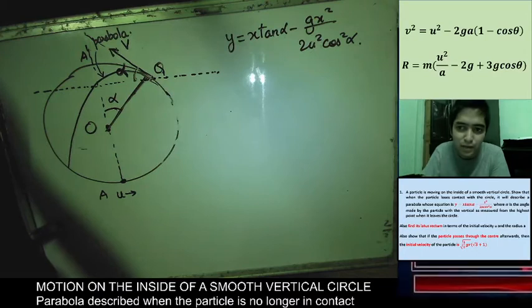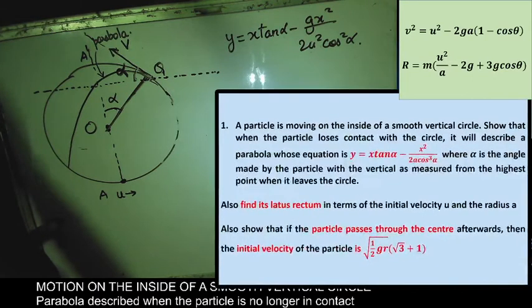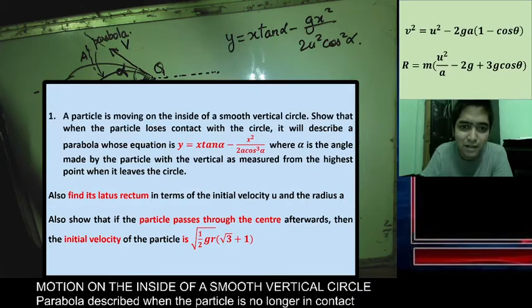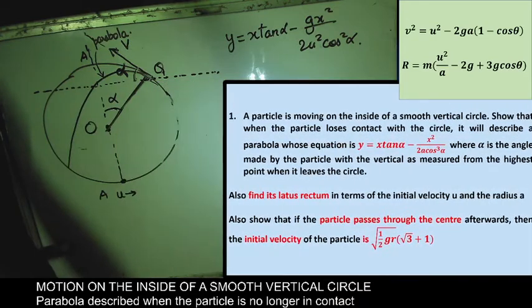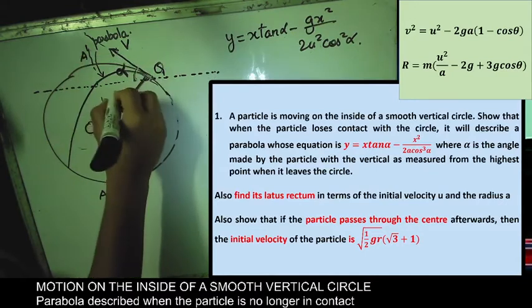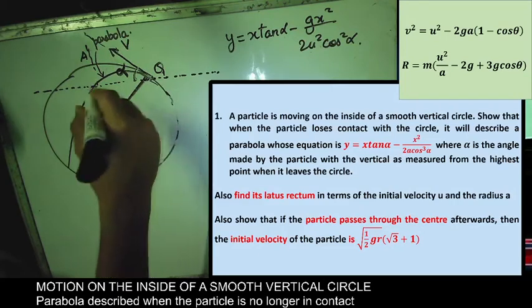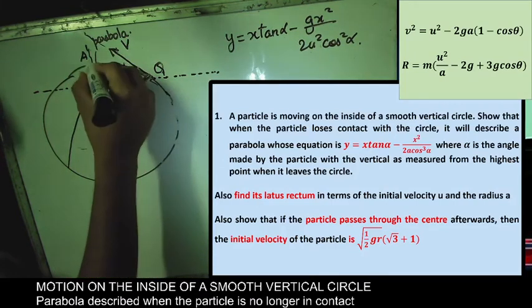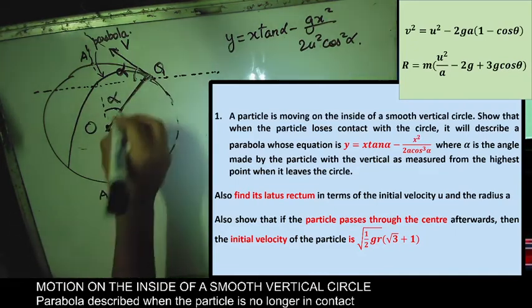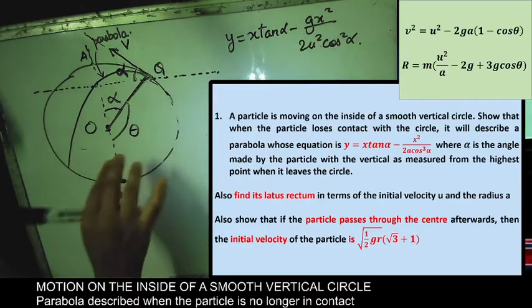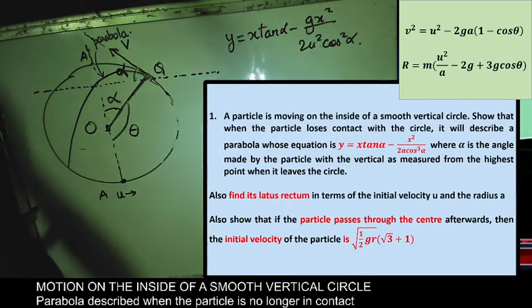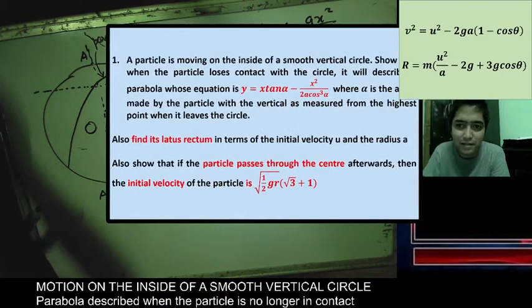Let us look at the question. A particle is moving on the inside of a smooth vertical circle. When the particle loses contact with the circle, it will describe a parabola. We need to find the equation of that parabola in terms of α, where α is the angle made with the vertical as measured from the highest point when it leaves the circle at Q. Note: θ is measured from the lowest point; α from the highest point; and θ + α = 180°. We also need to find the latus rectum in terms of initial velocity U and radius a.